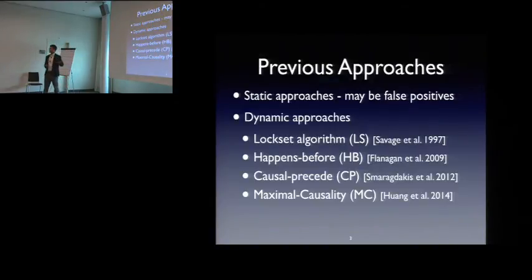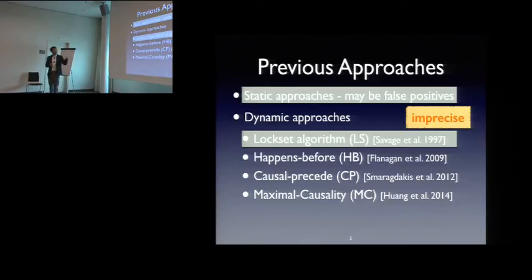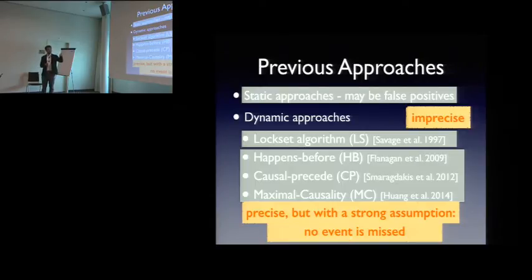Of course, previous approaches. So many of them are race detection, static approaches and dynamic approaches. For example, the lock set algorithm, which is very classical and is highly influential in this community. So in general, we know that static approaches and the classical lock set-based algorithm can produce false positives, meaning that they are imprecise. And we also have several classical approaches which are previously known to be precise, including happens-before, causal-precede, and maximal-causality.